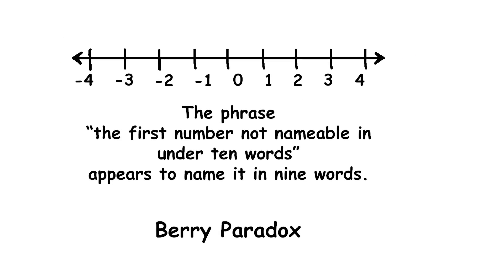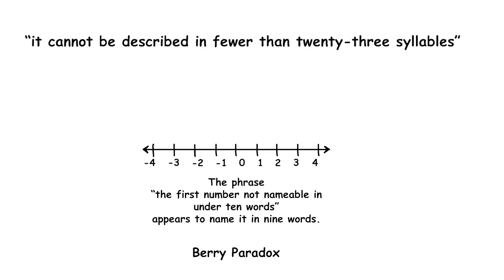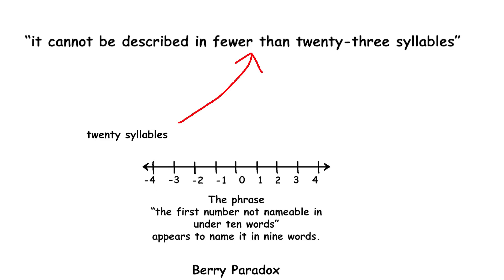Berry Paradox. Berry's paradox is how we define numbers with very specific rules. Imagine trying to define a number using a description that states it cannot be described in fewer than twenty-three syllables. The catch is that the phrase itself has only twenty syllables. This creates a contradiction because the number it defines supposedly requires more syllables to describe than the phrase itself.